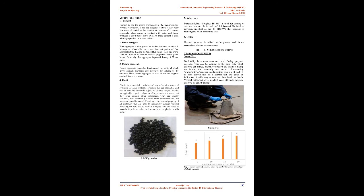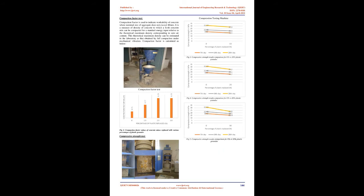Reference 3: Studies on Concrete Containing E-Plastic Waste. Utilization of waste materials and by-products is a partial solution to environmental and ecological problems. Use of these materials not only helps in getting them utilized in cement, concrete and other construction materials, it helps in reducing the cost of cement and concrete manufacturing, but also has numerous indirect benefits such as reduction in landfill cost, saving in energy, and protecting the environment from possible pollution effects.